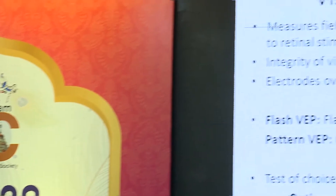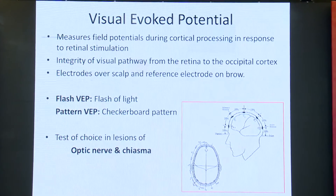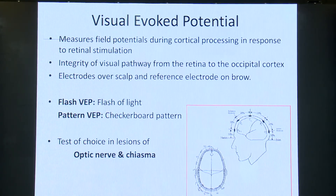VEP essentially measures visual field potential during cortical processing in response to retinal stimulation. We saw retinal responses to a light stimulus being transduced from light to an electric stimulus in ERGs, and then as they are processed in the occiput a shape is brought to them. It measures the integrity of the visual pathway from the retina — essentially the ganglion cell layer — to the occipital cortex, with electrodes over the scalp. We have flash VEP using a flash of light, and pattern VEP using a checkerboard, which is the test of choice for optic nerve lesions up to the chiasma.